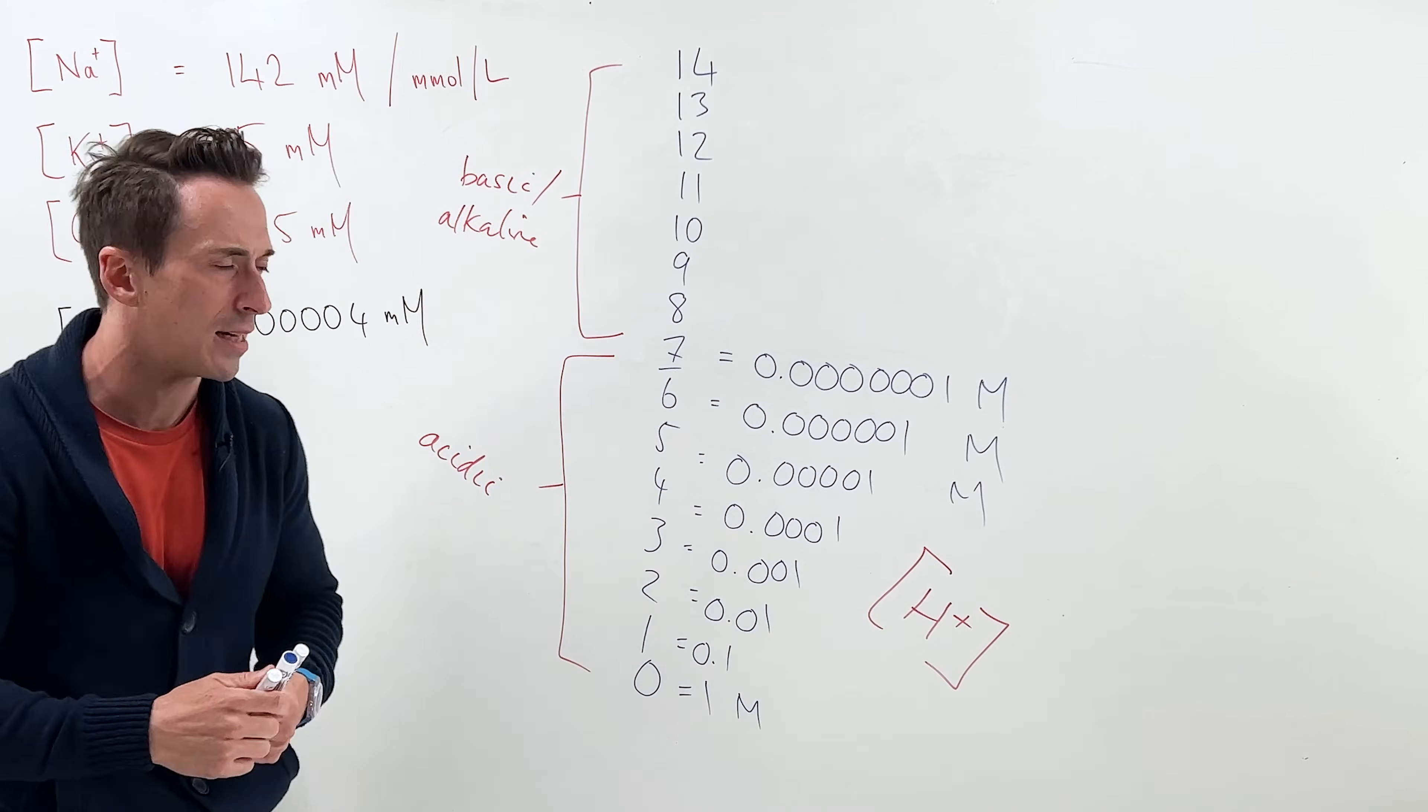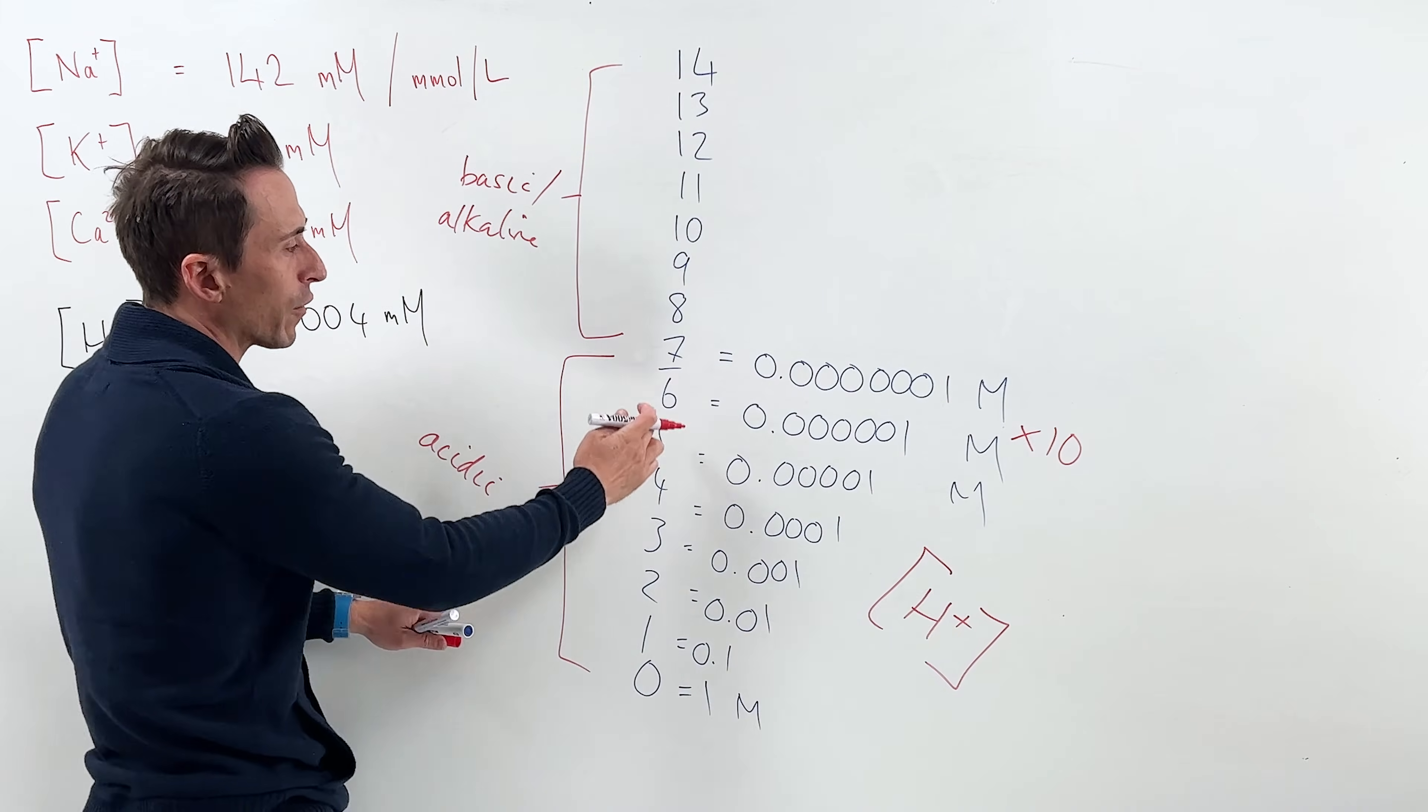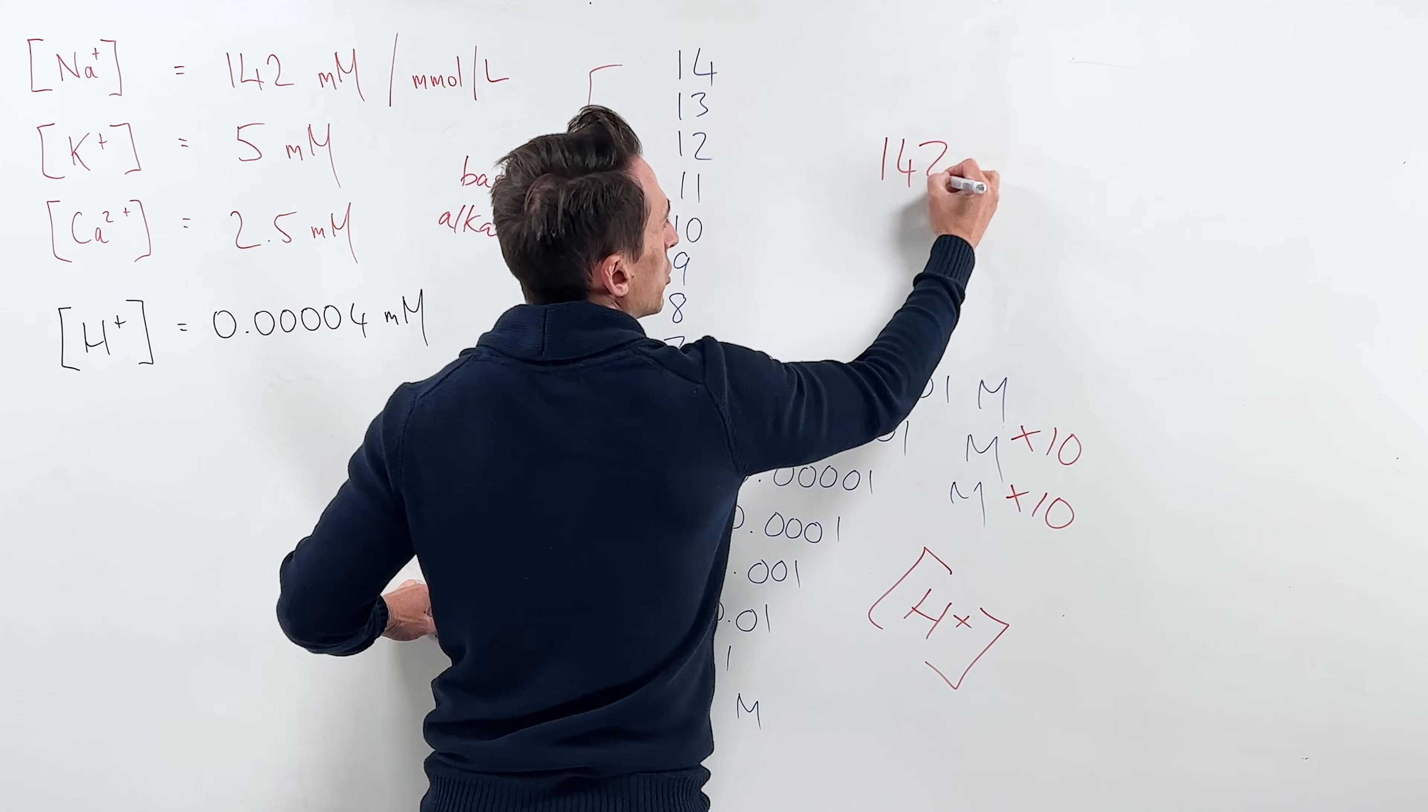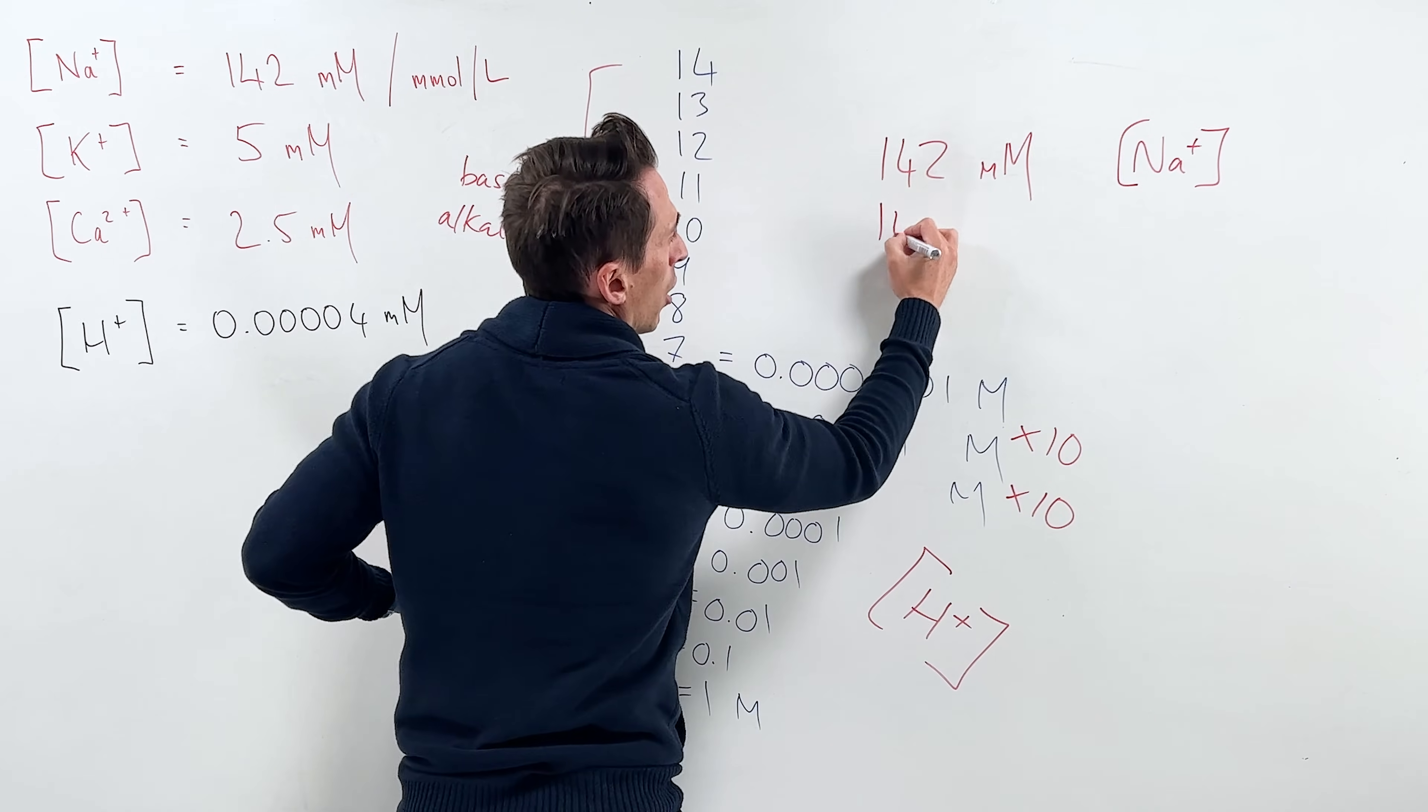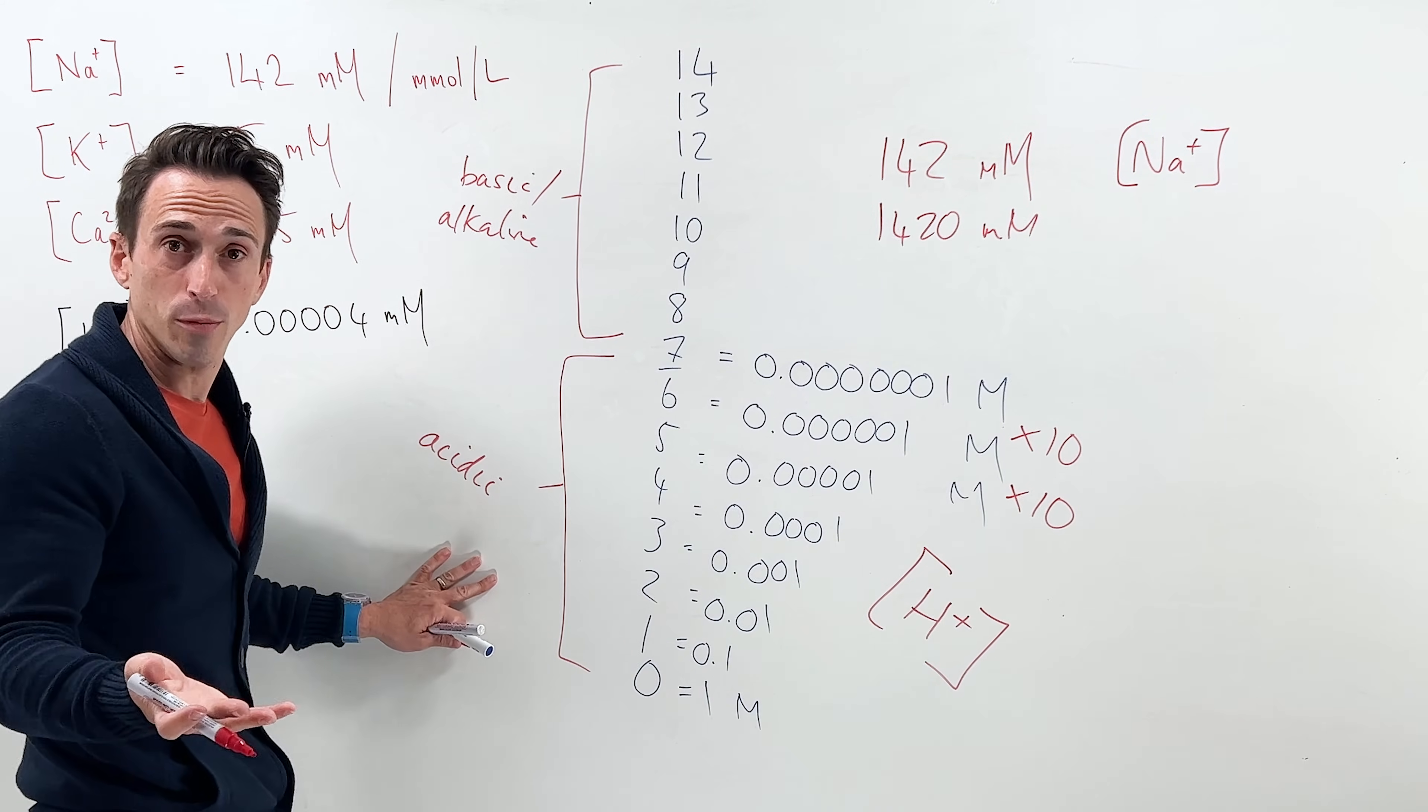The other important thing you must understand here is that going from a pH of 7 to 6 may look like a small change, but it's 10 times the concentration difference. 10 times. Going from a 6 to a 5, it's 10 times again concentration difference. 10 times. That's like saying your blood is 142 millimolar of sodium in it, right? That's like saying now you've got 1420 millimolar. It's 10 times different, simply going from a pH of 7 to 6. And I said that your blood pH is 7.4, right? That's the average.